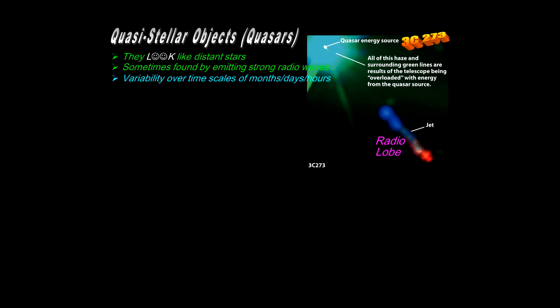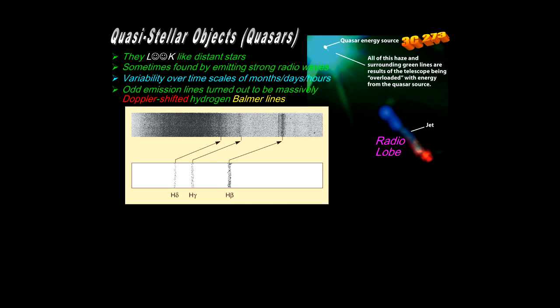The variability of their light can be on the order of months, days, or even hours. The time for the variability has implications for the size of the object that's producing the change in light. They manifest strange emission lines and part of that strangeness is associated with Doppler shifted hydrogen Balmer lines. It took a long time to figure this out because the shift is so massive.